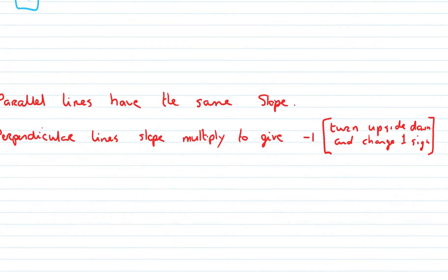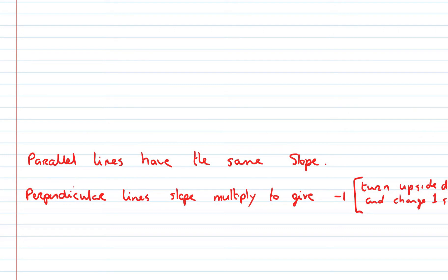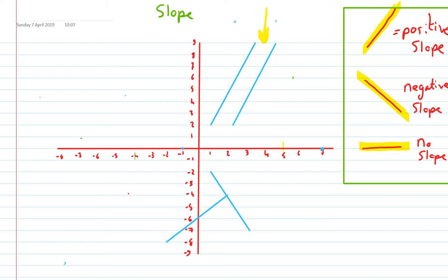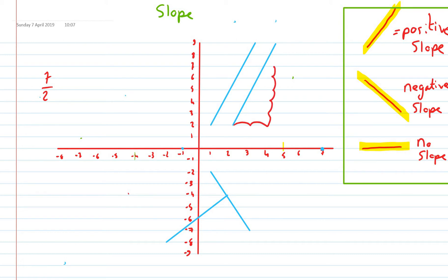Two things we need to know. First, parallel lines have the same slope. Looking at these two parallel lines — I run two and rise seven, giving a slope of two over seven. Doing the same for the other line: run two and rise seven — same slope. Hence they are parallel. So if you're asked to prove two lines are parallel, just find both their slopes. If they are the same, the lines are parallel.